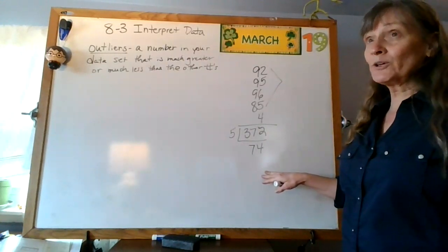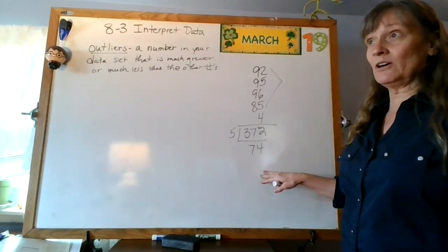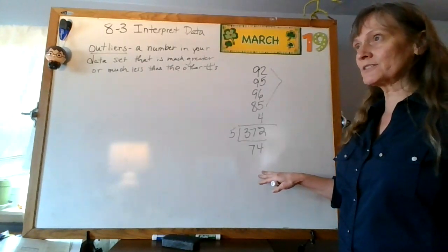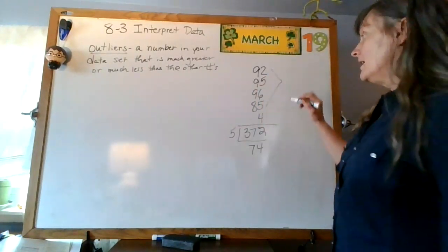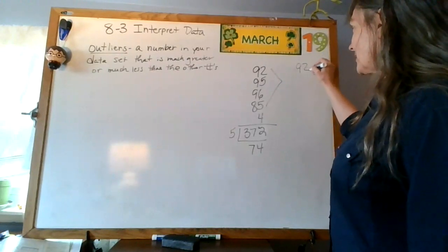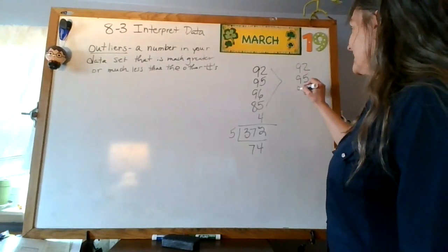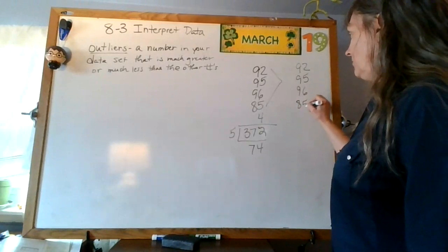This is gonna be important when we're analyzing data to know, is there an outlier? Is there something that was way lower, way high? So if I were to do this again, and throw out my outlier.